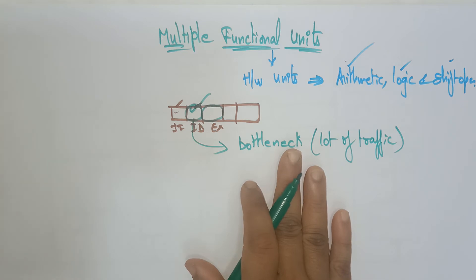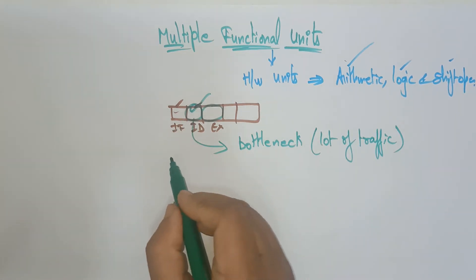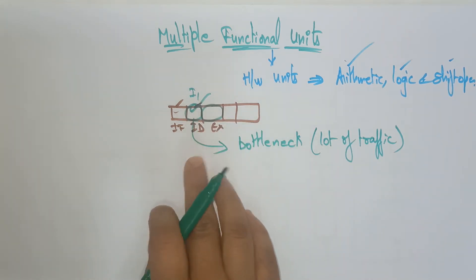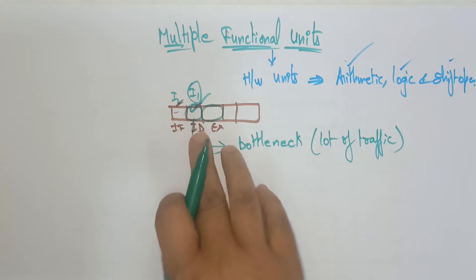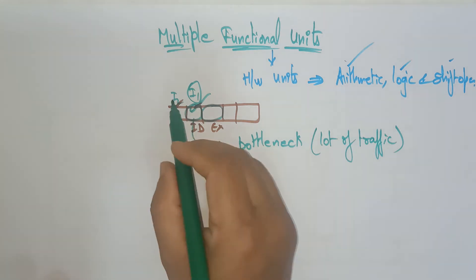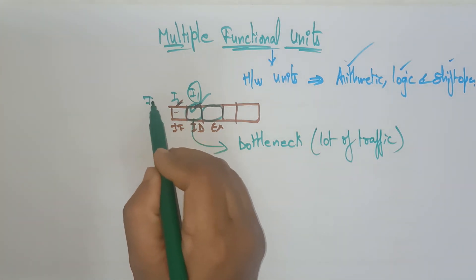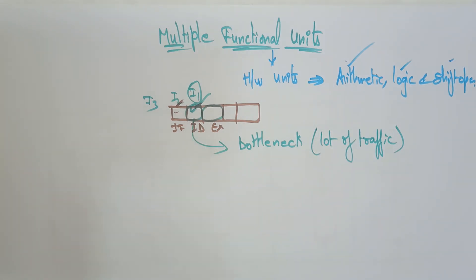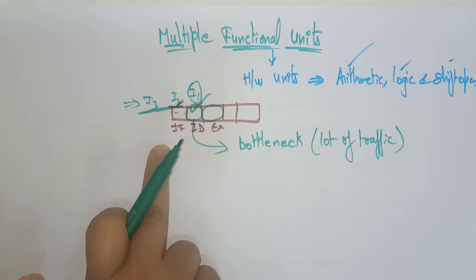So how does this bottleneck reduce pipeline performance? Suppose instruction fetch sends instruction 1 to instruction decode. Now instruction decode is working on instruction 1, and instruction fetch is working on instruction 2. Because of some missing operands, instruction 1 is still waiting in the decode stage — it is not moving to the next stage because the needed operands are not available in memory. So I2 is ready to perform the operation on instruction decode, but instruction decode is already busy with instruction 1 and cannot take I2. Then I3 comes from outside and waits for instruction fetch. All instructions are waiting — this is a lot of traffic, creating a bottleneck problem.